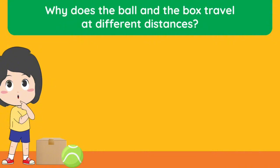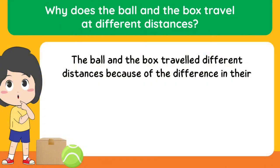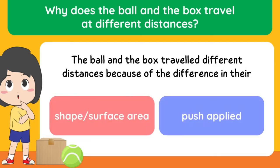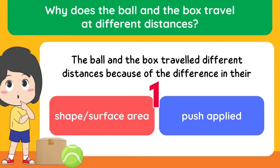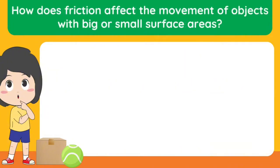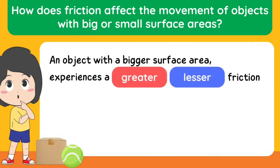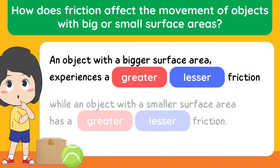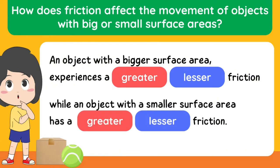Why does the ball and the box travel at different distances? The ball and the box traveled different distances because of the difference in their surface area. How does friction affect the movement of objects with big or small surface areas? An object with a bigger surface area experiences greater friction, while an object with a smaller surface area has lesser friction.